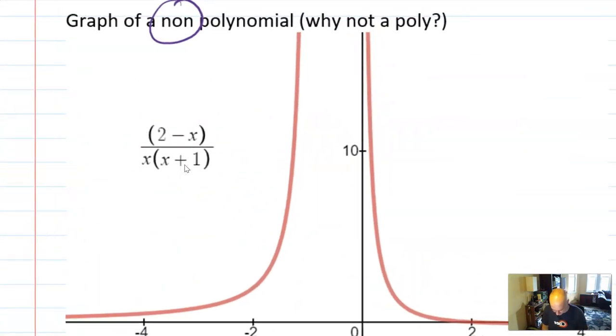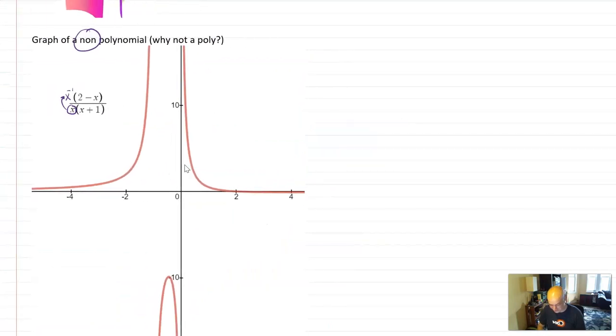That's not a polynomial. You might say, Mr. Eck, why is that not a polynomial? Well, you have an X on the bottom. That could be written on the top as X to the negative one. So as soon as you have that negative exponent, you're in trouble. You know it's not a polynomial. And what has happened to this graph? It's not nice.